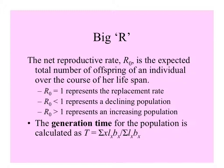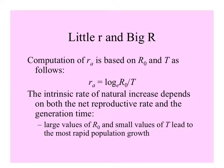If big R equals one, that's the replacement rate. Less than one is typical of a declining population; greater than one indicates an increasing population. You can calculate generation time for the population as the sum of the intervals times the survival times the birth rate, divided by the sum of the survivals over the birth rate. So you can approximate the Malthusian parameter using the net reproductive rate and generation time. Large values of net reproductive rate and small values of generation time lead to the most rapid population growth.